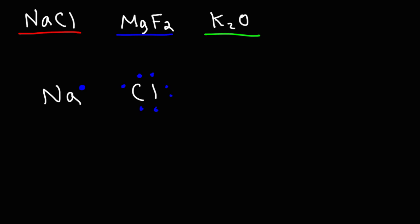Metals like to give away electrons. Nonmetals are electronegative and they like to acquire electrons. So sodium is going to give away its one electron to chlorine, and when it does so it's going to become a metal cation — it's going to develop a positive charge. Chlorine is going to develop a negative charge.